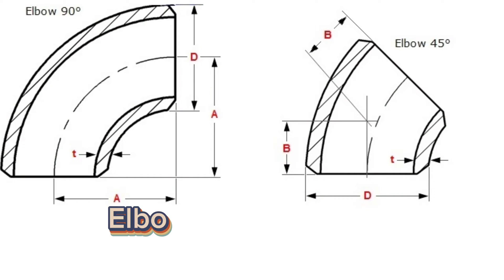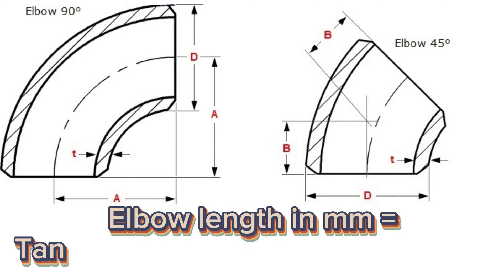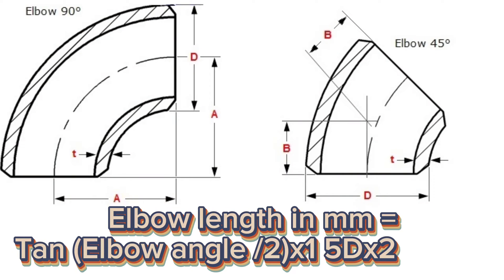Elbow length in mm equals tangent, elbow angle slash 2, times 1.5 d times 25.4 in millimeters.